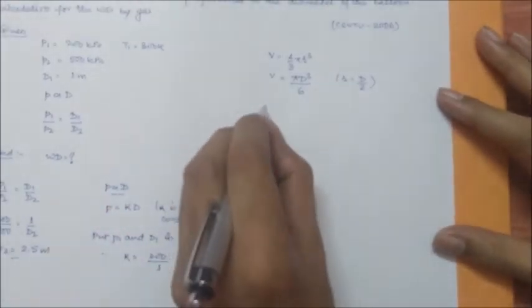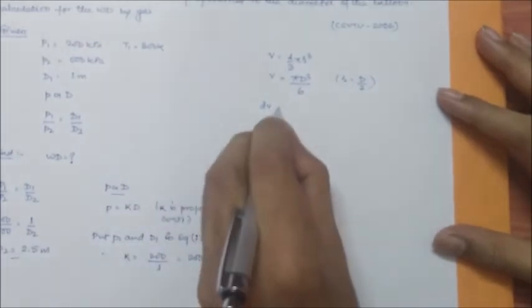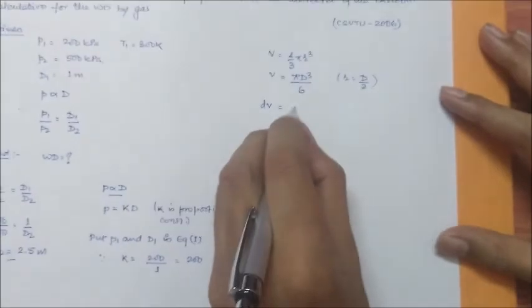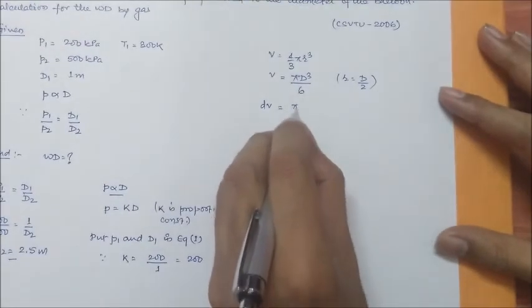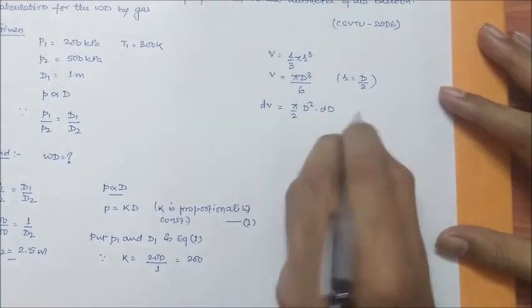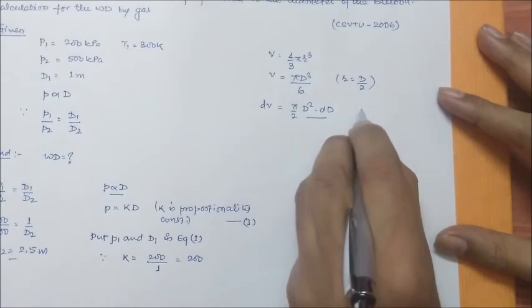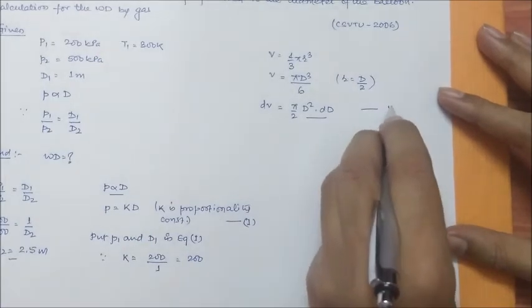So it can be written in terms of derivative: dV as π/2 D² into dD. Put it as equation 2.